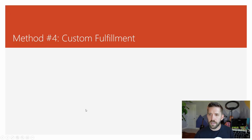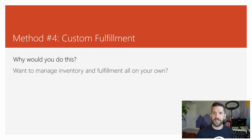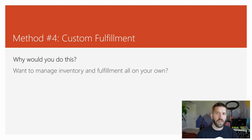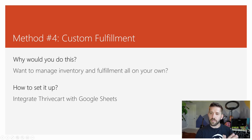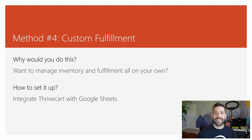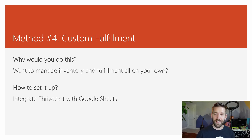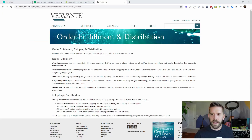The last method is custom fulfillment. If you're a small operation and don't want to deal with a fulfillment service — for example, we made little felt roses as a handcraft project for my five-year-old daughter to learn about business — you might not want to go through all the fuss of setting up a tool like Vervante. You're probably fine shipping it out yourself. I'll show you how to set up a direct integration with Google Sheets so that when a sale is made in Thrivecart, a new row is added to a spreadsheet and you can manage your inventory on your own.